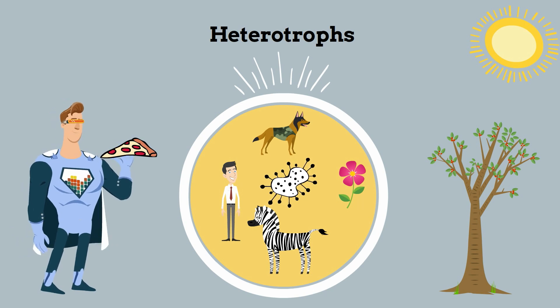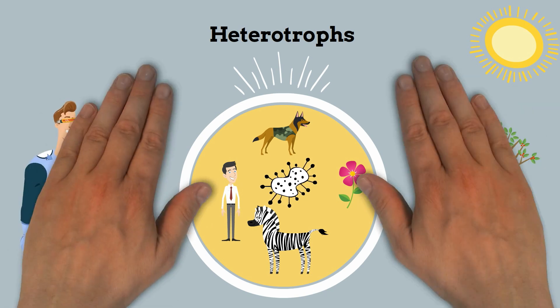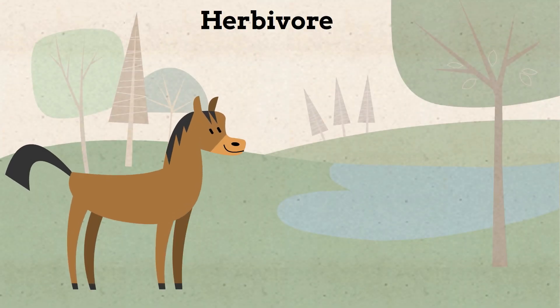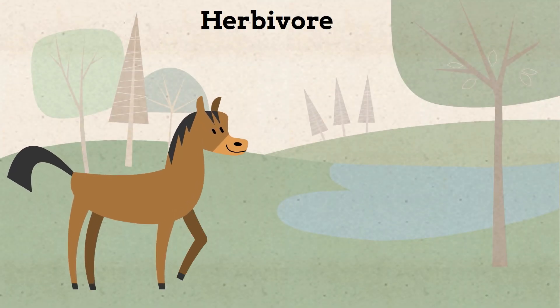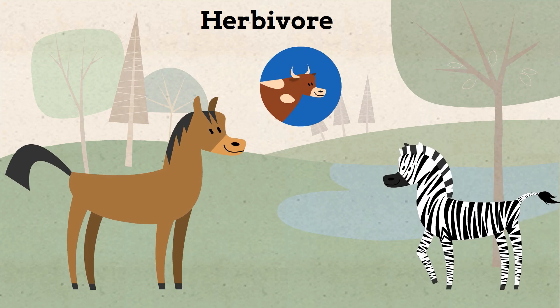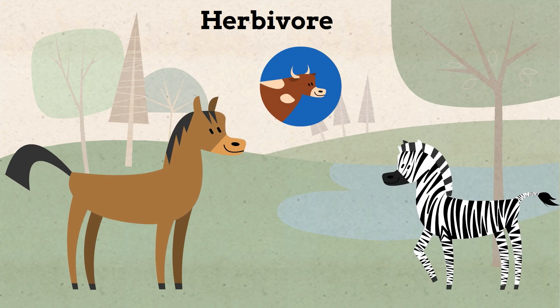Up first is an herbivore. When it's time for a meal, herbivores like plants and only plants. Cows and zebras are examples.